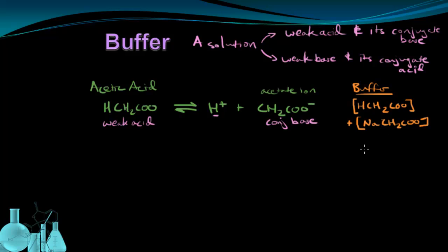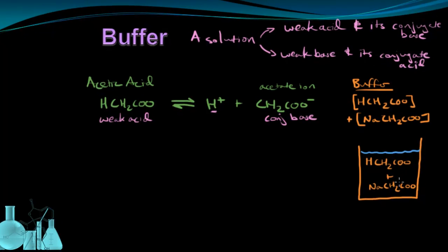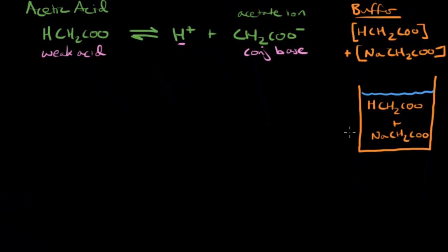So now the big question is, how does this buffer work? Well, if I take some container, fill it with water, and I add acetic acid and my acetate ion containing salt, I now have a buffered solution in this container. Now this buffer is going to resist a change in pH. That means it's going to resist an increase in pH and resist a decrease in pH. So let's look at those two cases separately.